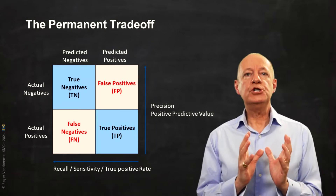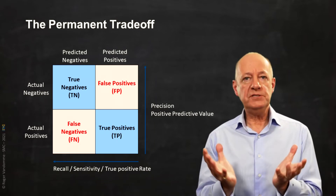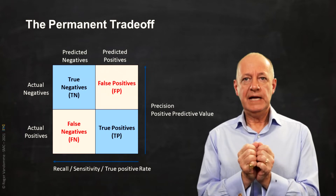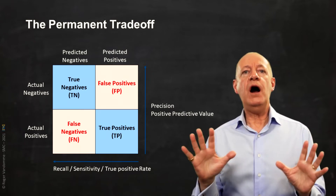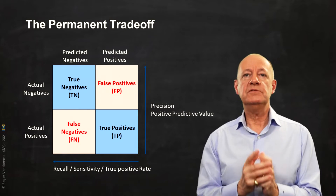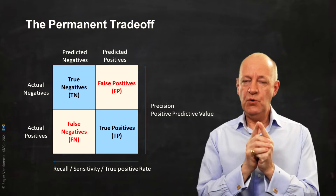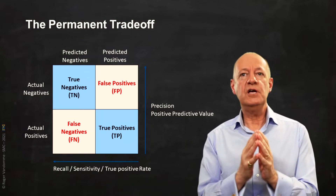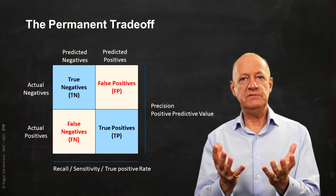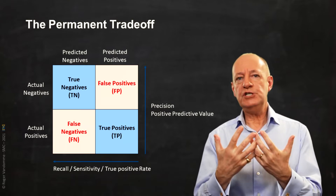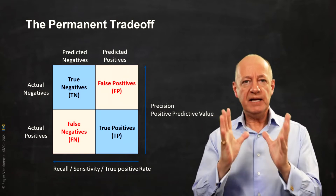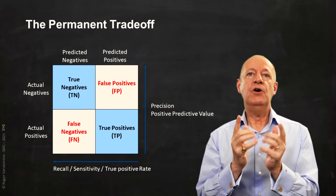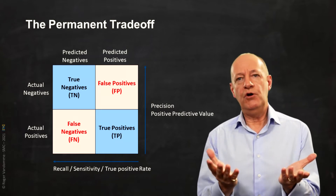Precision is the proportion of true positives in all positive predictions — that's the measure of the accuracy of my prediction. At maximum precision, all our positive predictions are real positives, but we are not sure we have identified all of them. Recall is the proportion of true positives among the entire population of real positives; it is therefore the measure of the identification of all positives. At maximum recall, all positives have been identified, at the cost of a number of false positives, and therefore a loss in accuracy.